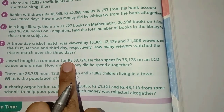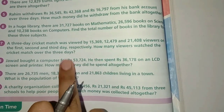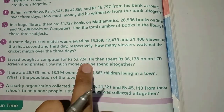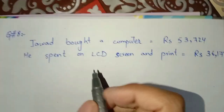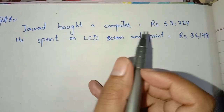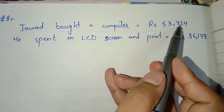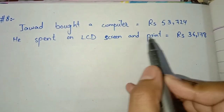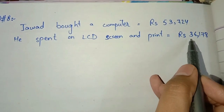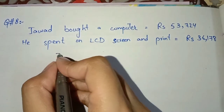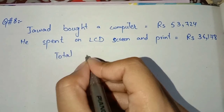Next, hamare paas hai computer liya tha aur uske upar jitne paise lage hain, un dono ko milakar total uski kitni money ban gayi hai. Solve karenge ki Javed ne computer rupees 53,724 liya aur LCD screen aur print mein usne itne lagaye the. Ab hame batana hai ki total money kitni lagi thi.